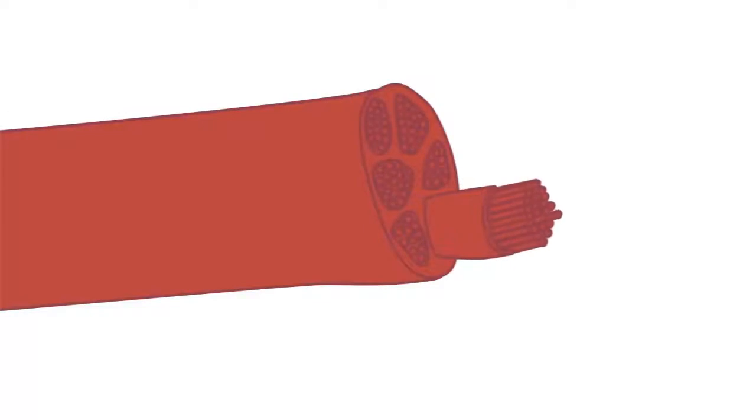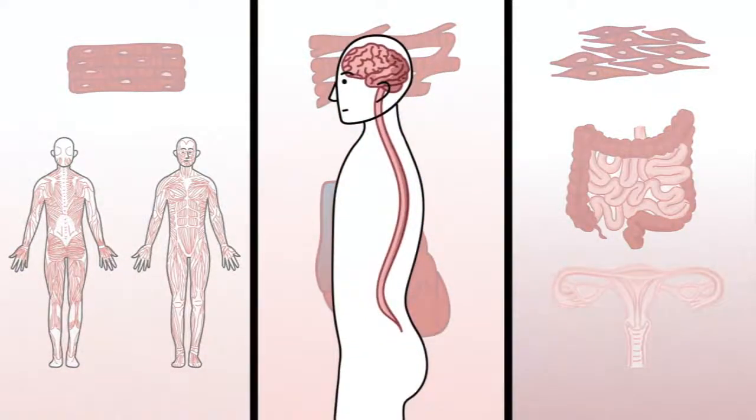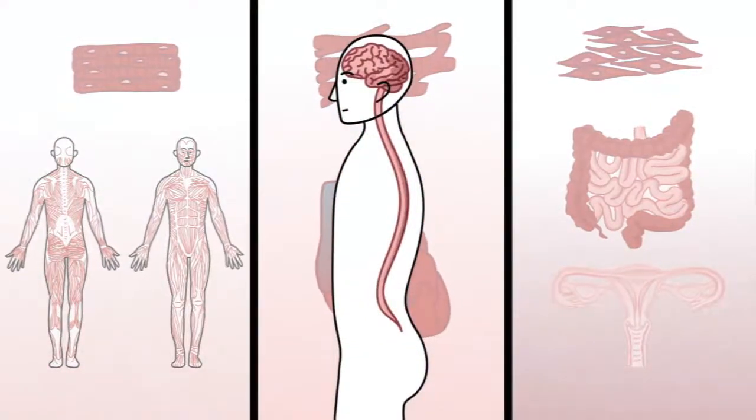All three types are made up of muscle cells, also known as fibers, bundled tightly together. These bundles receive signals from the nervous system that contract the fibers, which in turn generates force and motion.